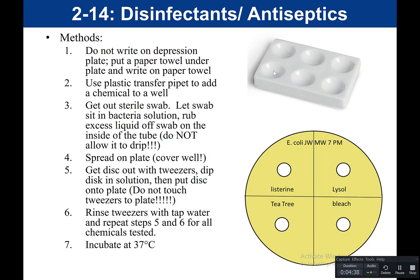Once you get your chemicals in all your wells, get out your sterile swab and dip it in the bacterial solution. For this plate, it would be E. coli. Dip the swab in the E. coli tube and rub the excess liquid off on the inside of the tube — you don't want the swab dripping wet because it will leak bacteria during transfer. Then take that swab covered in bacteria and swab your plate to make a lawn, covering the entire plate completely with bacteria.